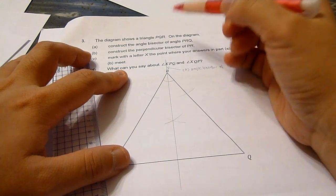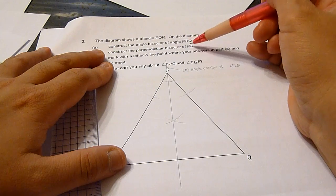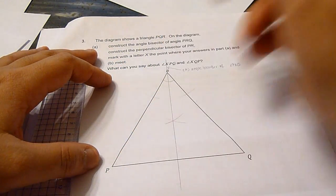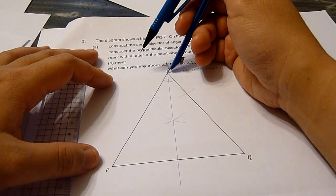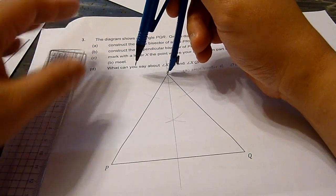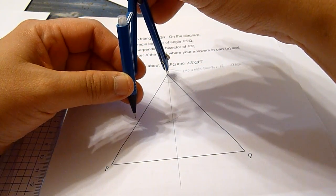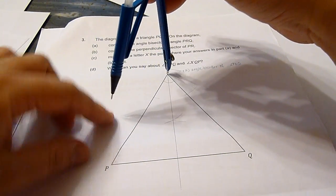Now it says construct the perpendicular bisector of PR. PR is here. So to construct a perpendicular bisector I will be marking two pairs of arcs. First I will stretch the arm of the compass slightly more than half of the length here.